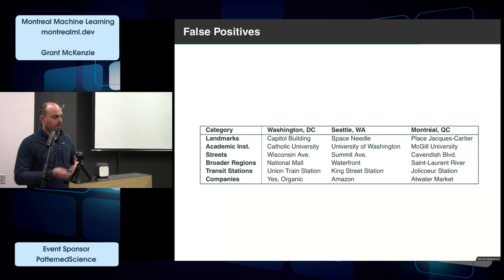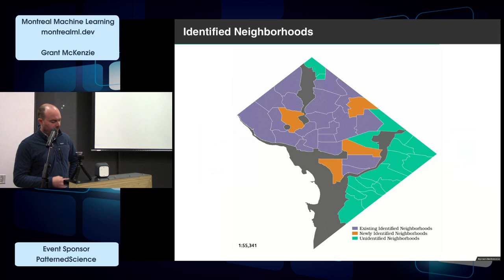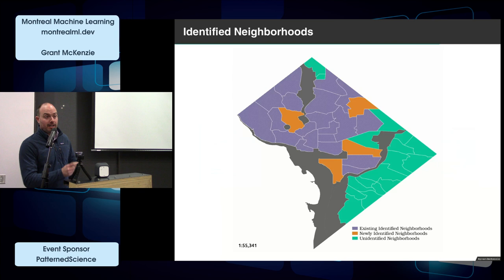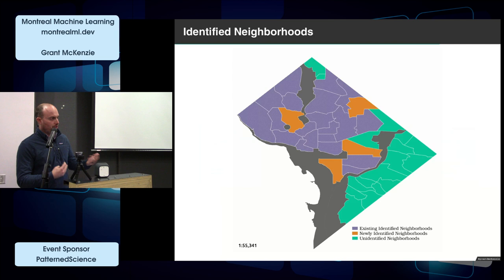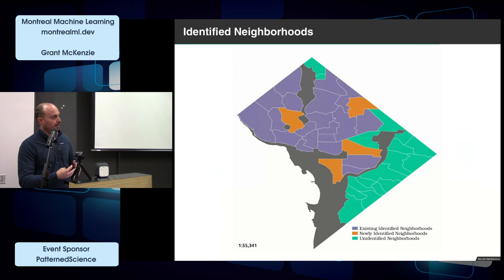The output from this — a very basic applied example — for Washington, D.C.: the purple shows neighborhoods we knew existed and our model identified well. The orange regions are neighborhood names or regions that didn't have explicit names, or where we identified new names. The green regions are areas where we got no identification of names at all, which brings up discussion about where Craigslist postings actually show up. In D.C., that's the poorest area of the city — a discrepancy where data correctly identifies neighborhoods in richer areas that advertise on Craigslist, compared to neighborhoods that don't have the data needed to train a good model.